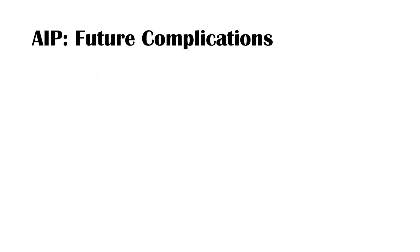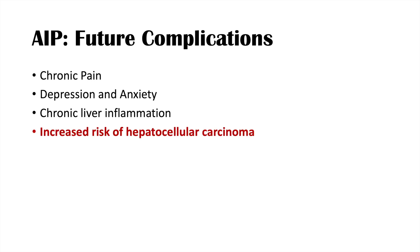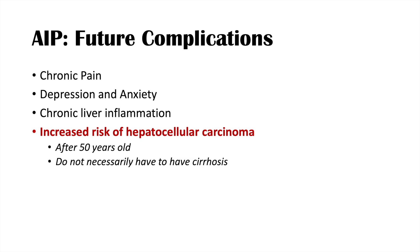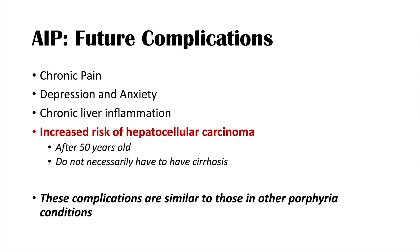AIP can be a devastating condition with many future complications. These include chronic pain, depression and anxiety, and chronic liver inflammation. Because of the chronic liver inflammation, there is an increased risk of hepatocellular carcinoma with AIP, generally occurring after age 50. Importantly, patients don't necessarily need to have cirrhosis to be at risk for hepatocellular carcinoma. These complications are similar to those in other porphyria conditions as well.